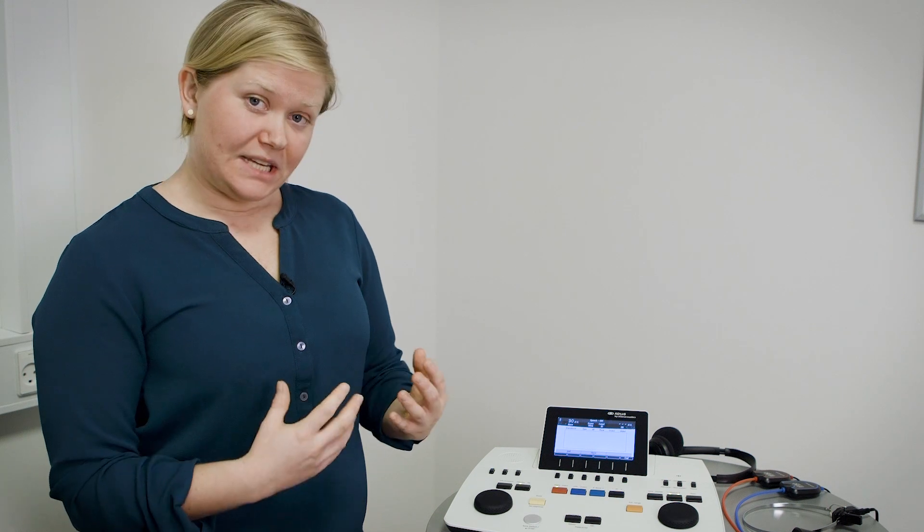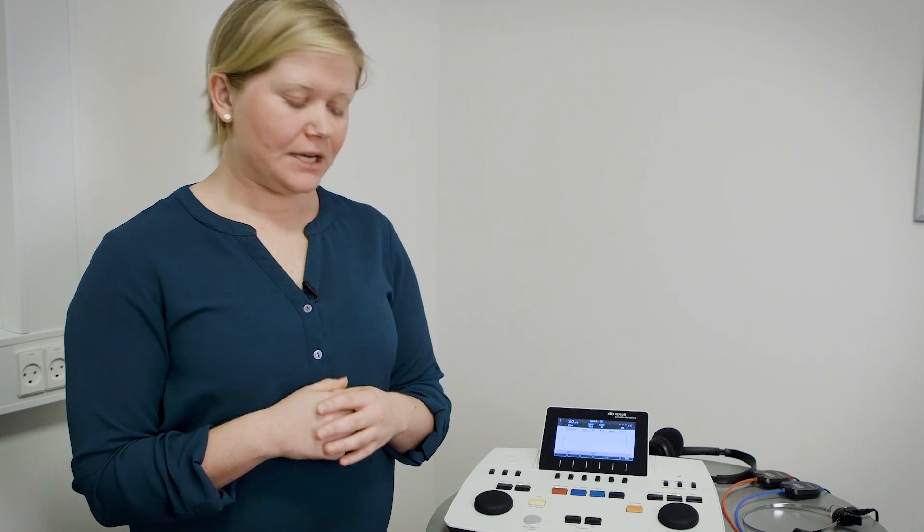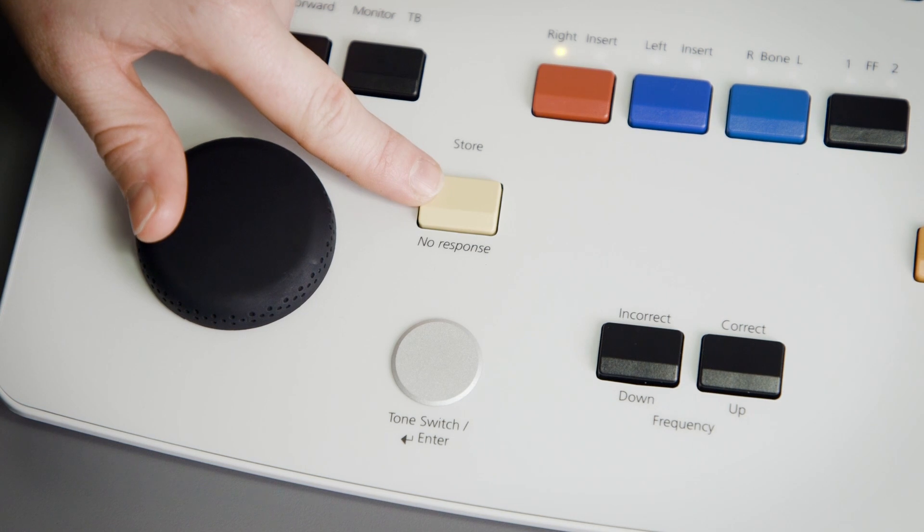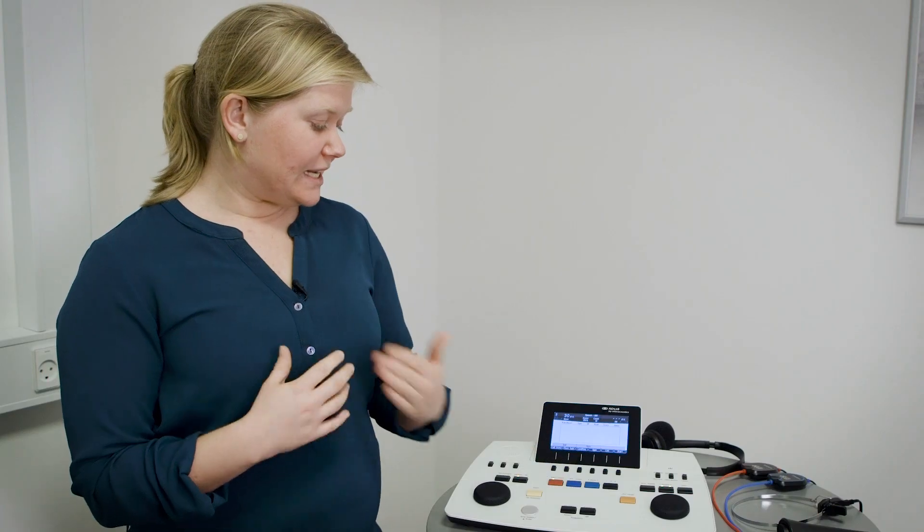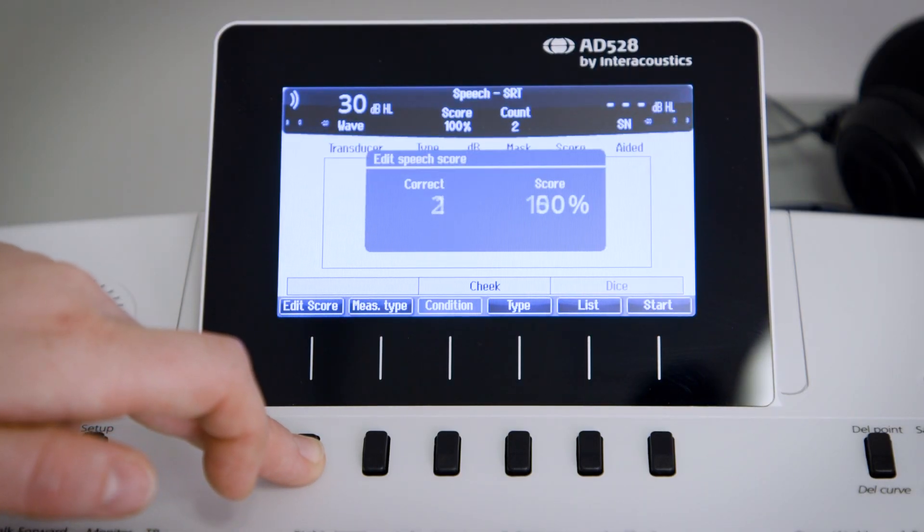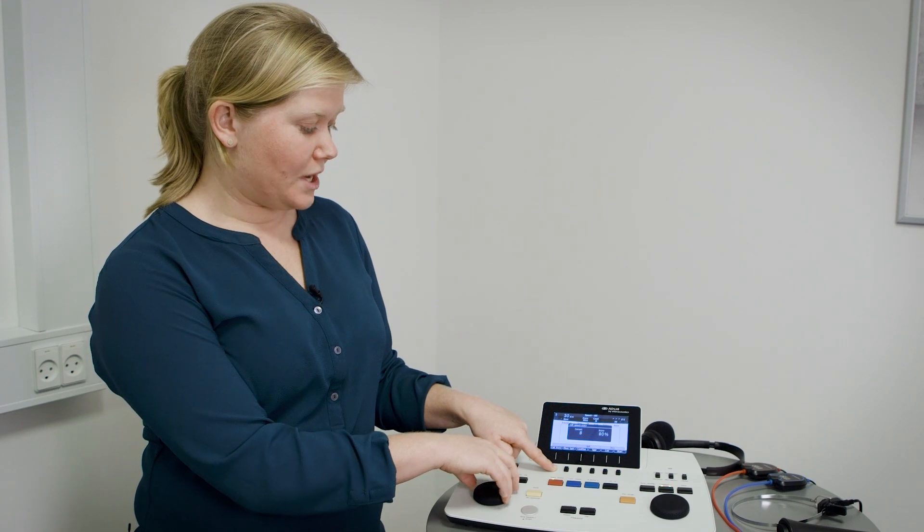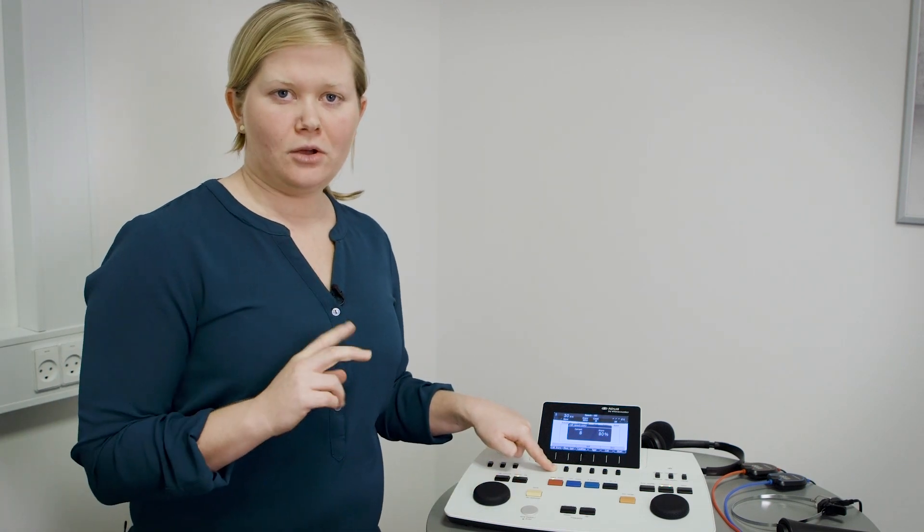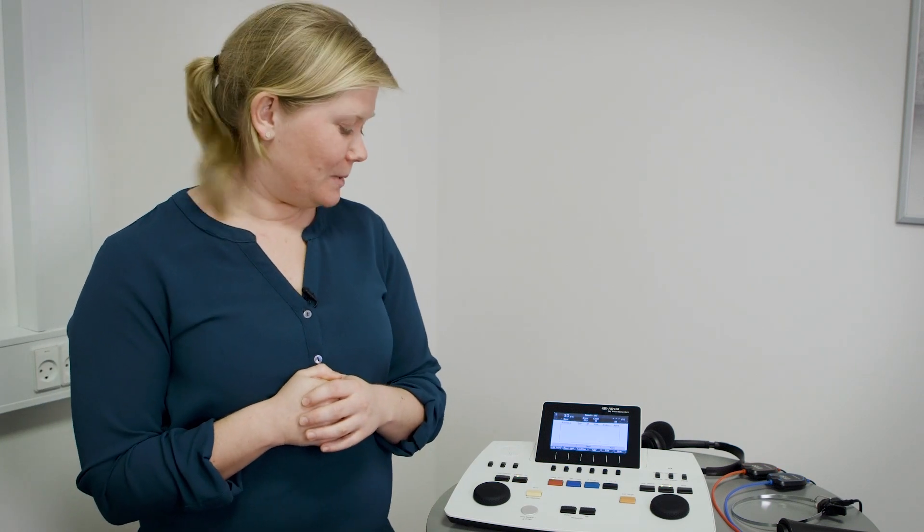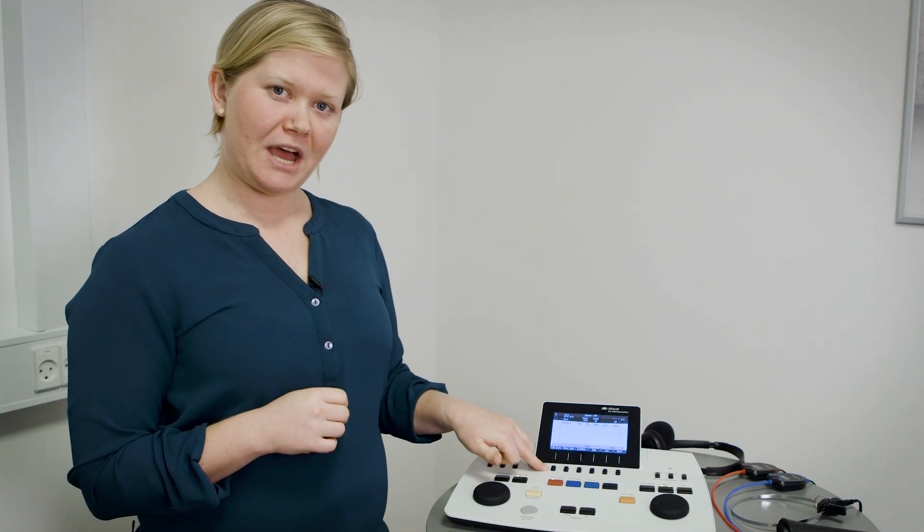That is what we do during the test to collect our results. When the result is finalized we want to store the results, which is done up here. In case something was obtained incorrectly or there's something we need to edit for the score, we have the opportunity to edit the score here so that you can change the score in case you press correct or incorrect in the wrong way. So that is available as the first function key that we have.